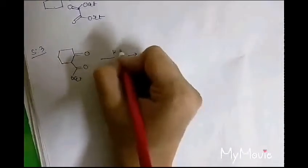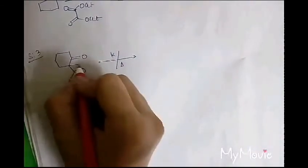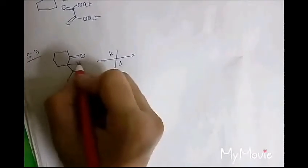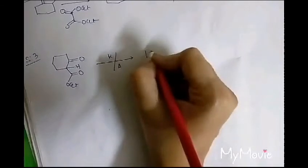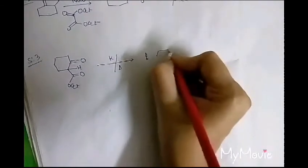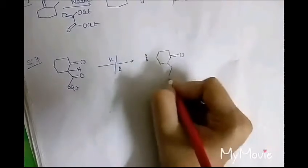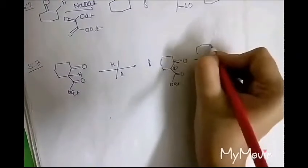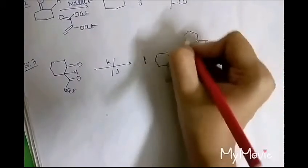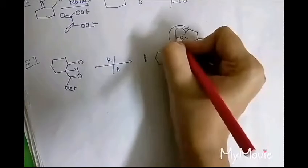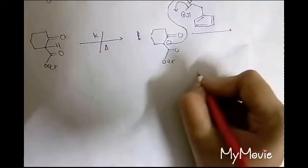In step three, this compound will be treated with potassium and heat. Potassium captures the acidic hydrogen at this position and gives a negative charge. This hydrogen is very acidic because it can undergo conjugation to both sides — with this keto group and this keto group. A negative charge will come to this position, and it will react with the compound from step one, that is, beta-phenylethyl bromide. It will attack to this position and bromine will leave. A new compound will form.